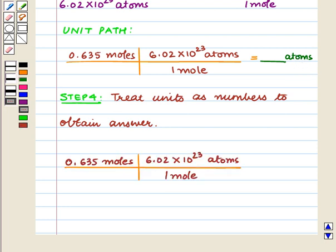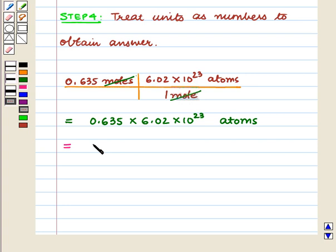So let us first cancel the units. Moles cancel with moles and we obtain 0.635 × 6.02 × 10^23 atoms, which is equal to 3.8227 × 10^23 atoms.